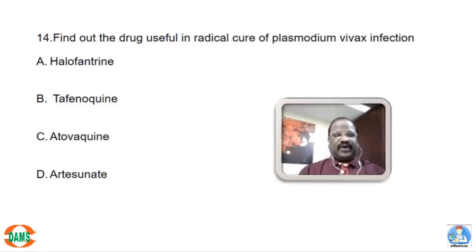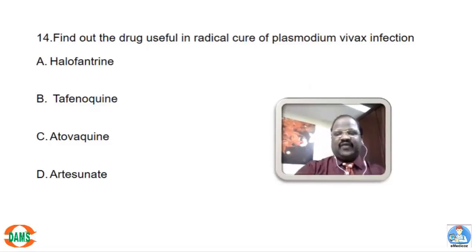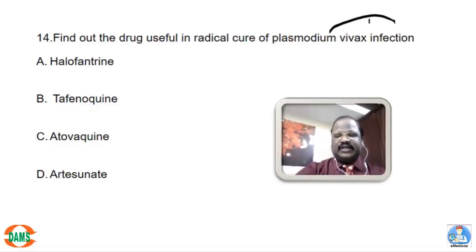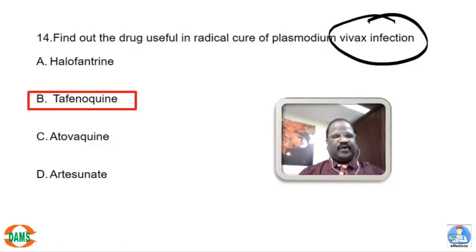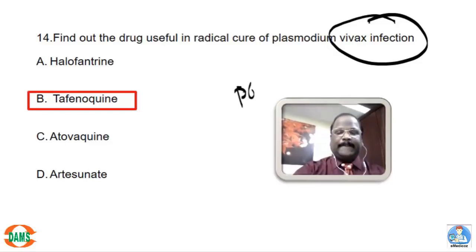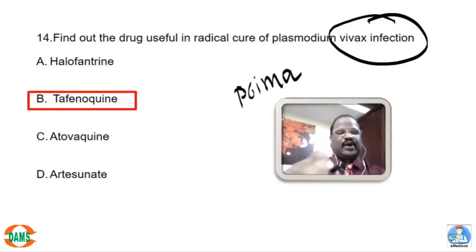Question 14: Find out the drug useful in radical cure of Plasmodium vivax infection. For vivax infection, after standard therapy, radical therapy is required. For radical therapy we have primaquine, and a newer drug called tafenoquine. Both primaquine and tafenoquine are useful for radical therapy of Plasmodium vivax infection.